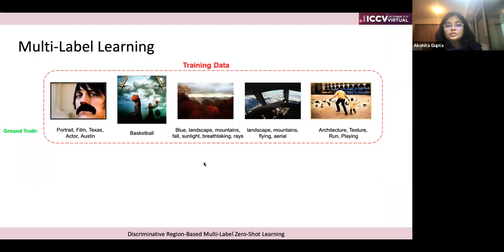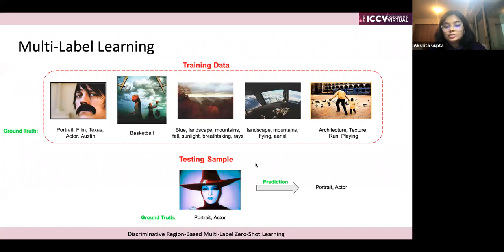I'll start by introducing a comparison between standard multi-level supervised learning and our multi-level zero-shot learning scenario. In standard multi-level learning, the training data has a certain count of classes the model is trained on, and at test time the images are also of the same classes. For example, the training data contains various classes, and the test classes like 'portrait' and 'actor' are also classes the model has seen at training time, so it can easily predict them.